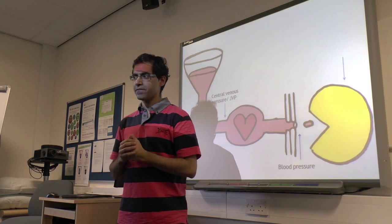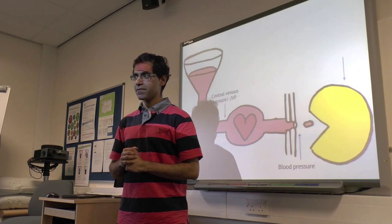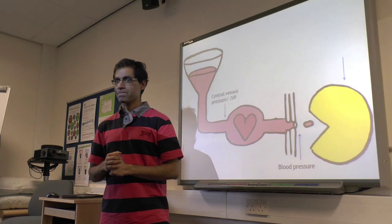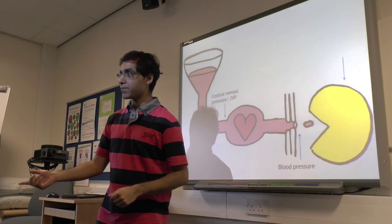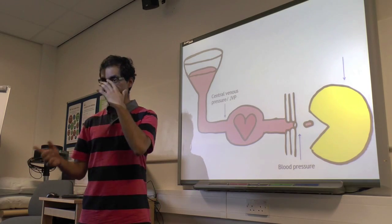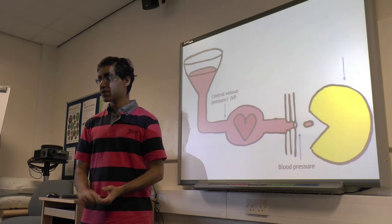Can you think of five markers of end organ perfusion? Oliguria. Oliguria, yeah, so decreased urine output. So you measure the urine output, yeah, absolutely, that's one. Lactate. Brilliant, that's two.